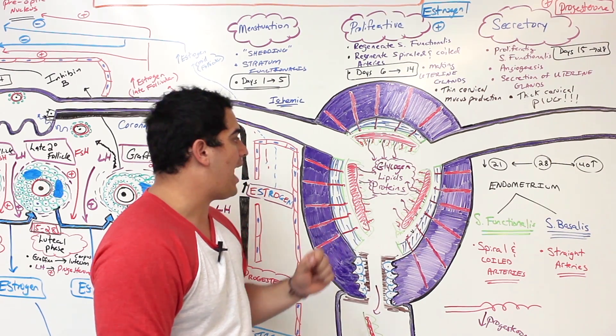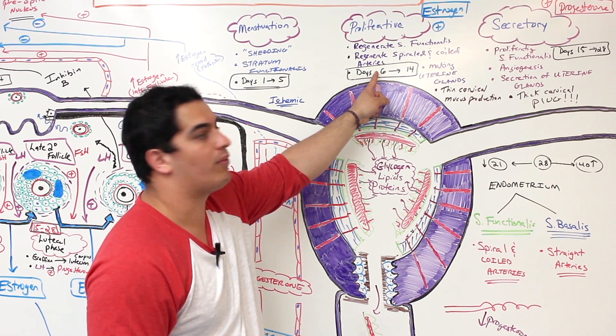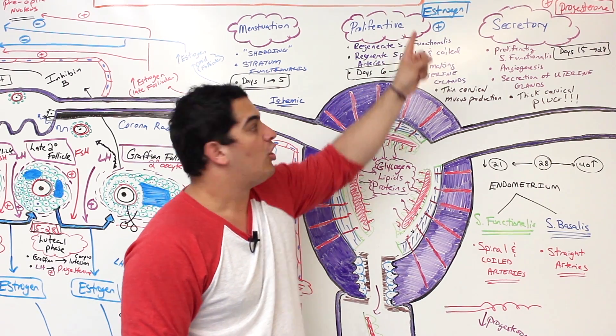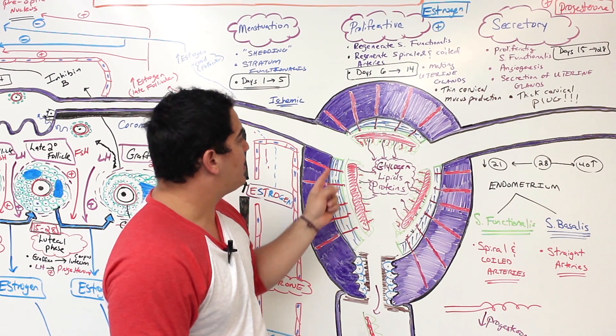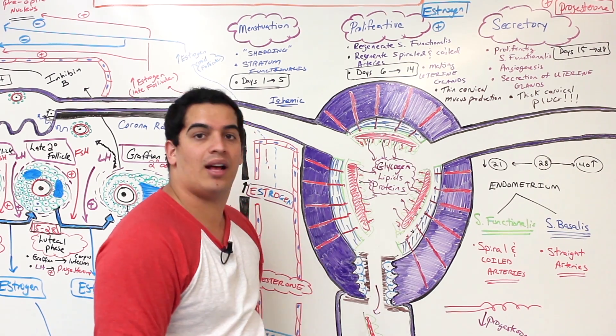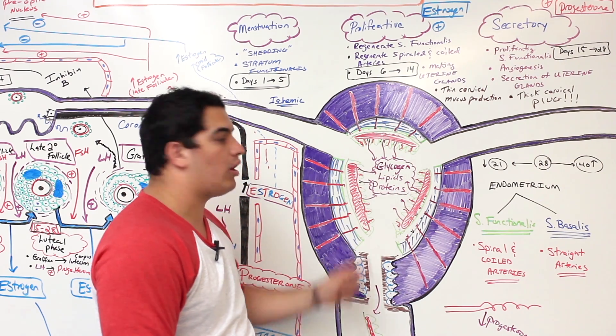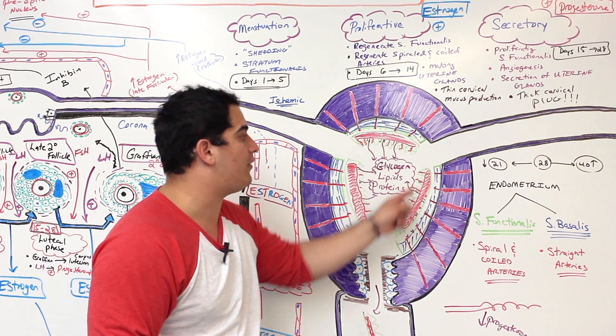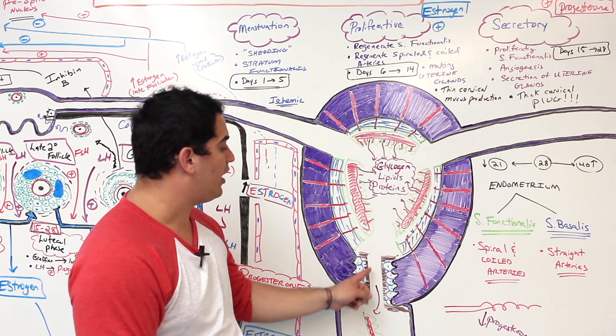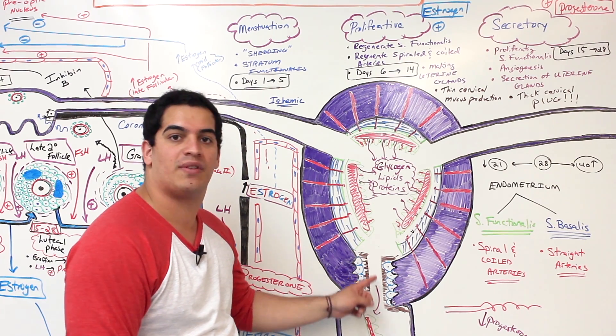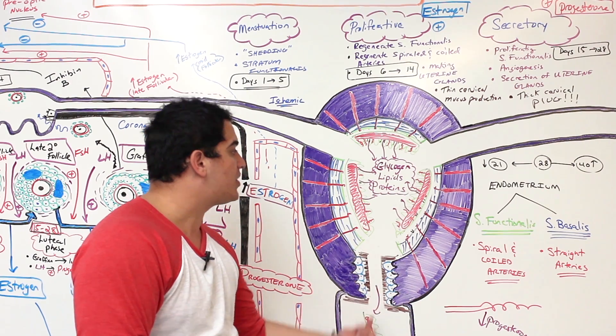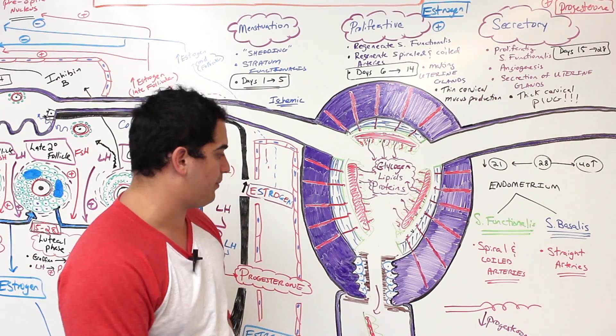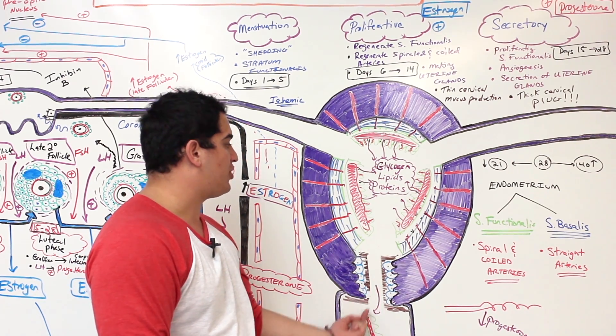Around menstruation you shed the stratum functionalis with the spiral and coily arteries. Then what happens? After that, days 6 through 14, what was the primary hormone made in significant amounts during the follicular phase? Estrogen. What is estrogen going to do? It's going to proliferate and regenerate that stratum functionalis layer, regenerate those spiral and coily arteries that are supplying it, make a lot of uterine glands—not secrete from the uterine glands, but just make a lot of uterine glands. What else was it doing? It was causing thin cervical mucus production within the cervix of the uterus, so it was easier for the sperm cells to move up through there. It also allows them to get capacitated, which we talked about in fertilization.